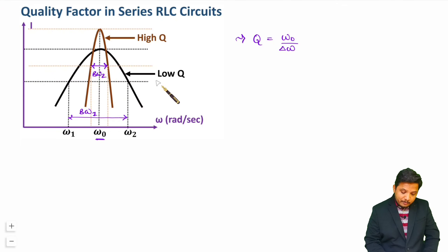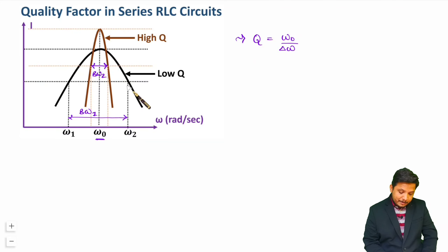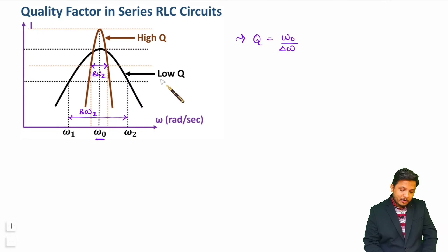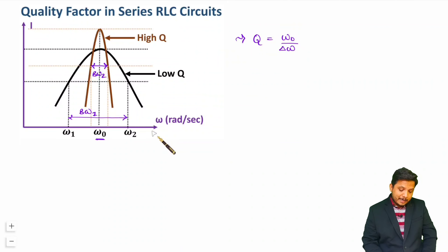So what it indicates: for high quality factor we have omega 0 divided by a lower bandwidth, and for low quality factor we have omega 0 divided by a higher bandwidth. That is how by graphical understanding you can determine whether quality factor is high or low based on the frequency response.